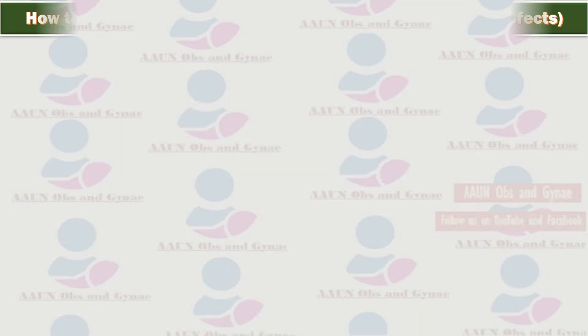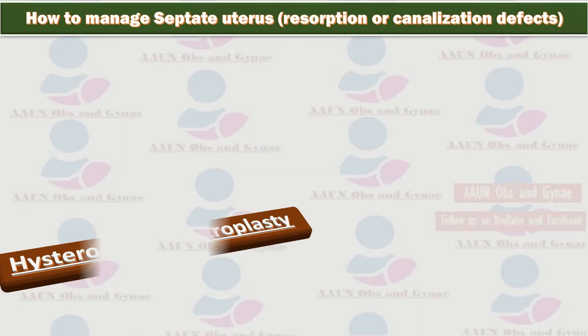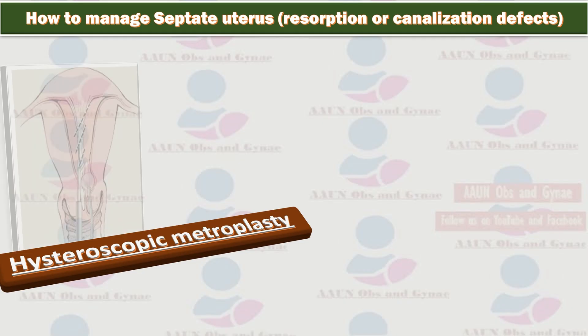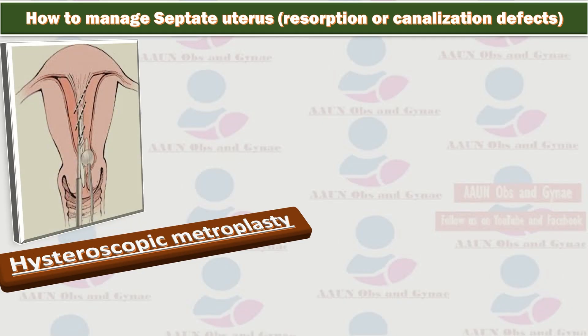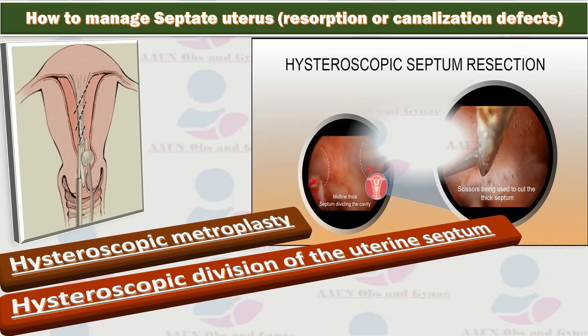For the management of septate uterus, involving resorption or canalization defects, hysteroscopic metroplasty — also known as hysteroscopic transcervical resection of the uterine septum — has become the current treatment of choice.